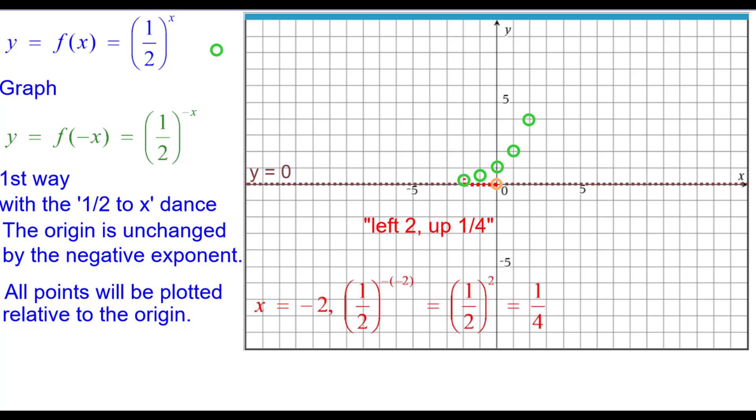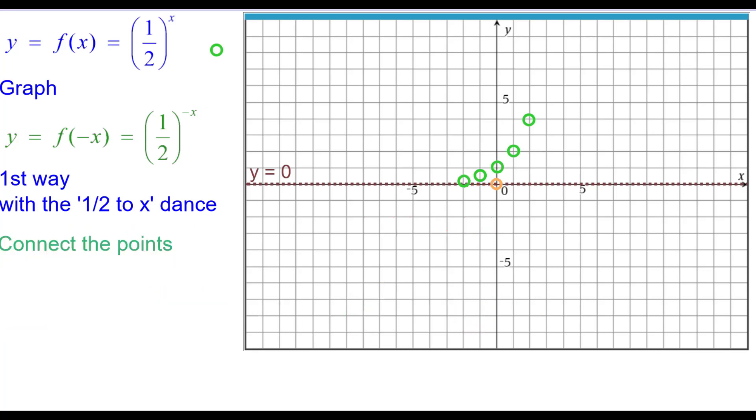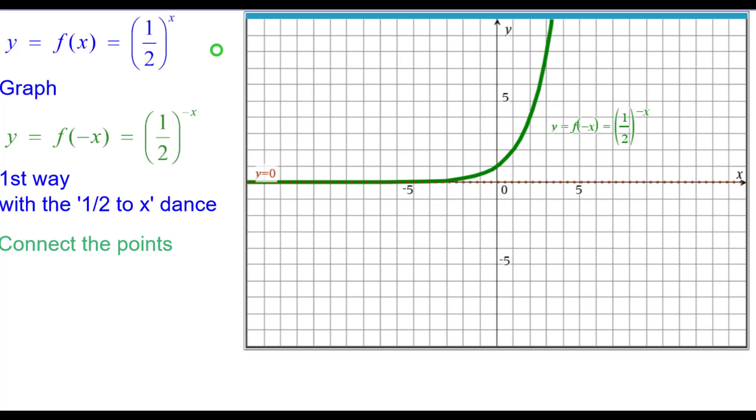And when x is negative 2, the opposite of negative 2 is positive 2. 1 half squared is 1 fourth. Connect the points. And there's our graph.